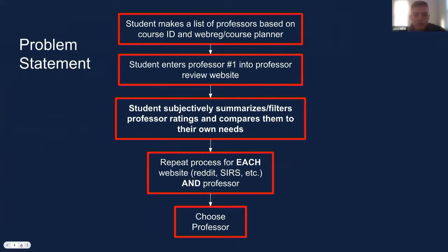About 91% of students either use or value professor ratings when selecting future classes, so it is definitely an important topic of discussion. Shown on this slide is the current method a student has to go through to decide on a professor for a course. To begin, the student has to make a list of professors based on their course, then enter professor 1 into a professor rating website, then subjectively and manually summarize all ratings and reviews and compare them to their own needs. This process has to be done over and over again for each site and each professor, and then the student has to choose themselves which professor is most compatible with them. As you can see, the current professor selection method includes a lot of steps and is almost completely manual.